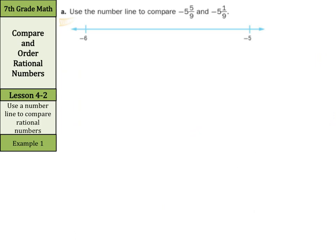If we want to use the number line to compare negative 5 and 5 ninths and negative 5 and 1 ninths, our first step here is going to be to divide this line into ninths. Right now I have negative 5 and 0 ninths, and so I'm going to divide this into 1 ninths, 2, 3, 4, 5, 6, 7 ninths, 8 ninths, and it's not exact for sure.